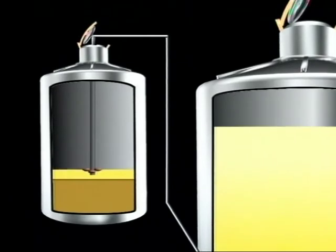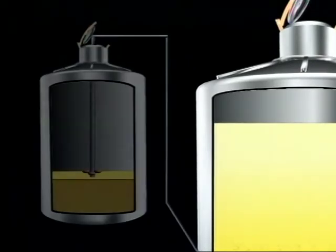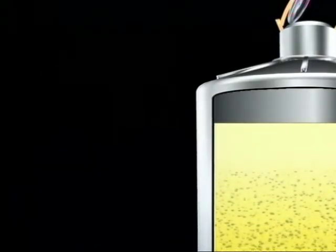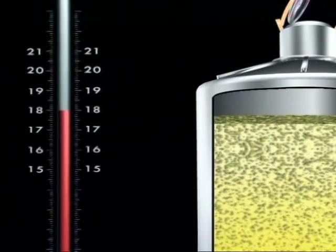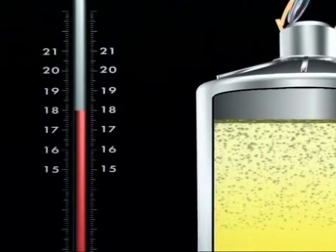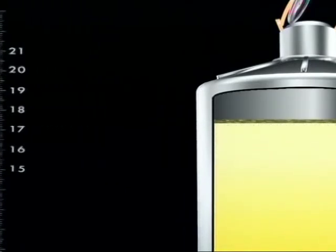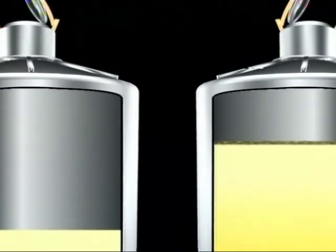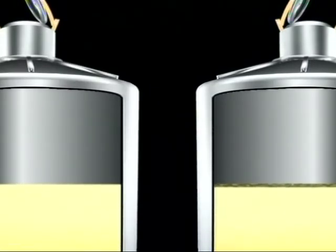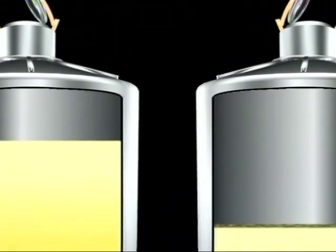The clarified must is decanted into a tank for fermentation. This tank is kept cool so that fermentation occurs at about 18 degrees Celsius. When all the sugar in the grape juice has been converted into alcohol, the fermentation process is complete. The wine is then transferred to storage tanks.